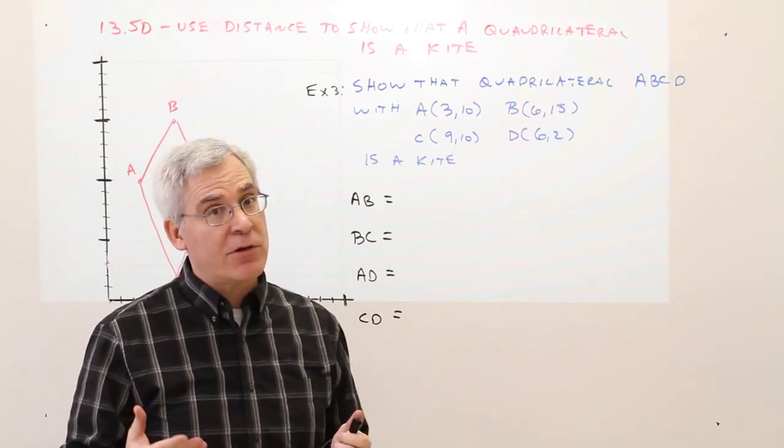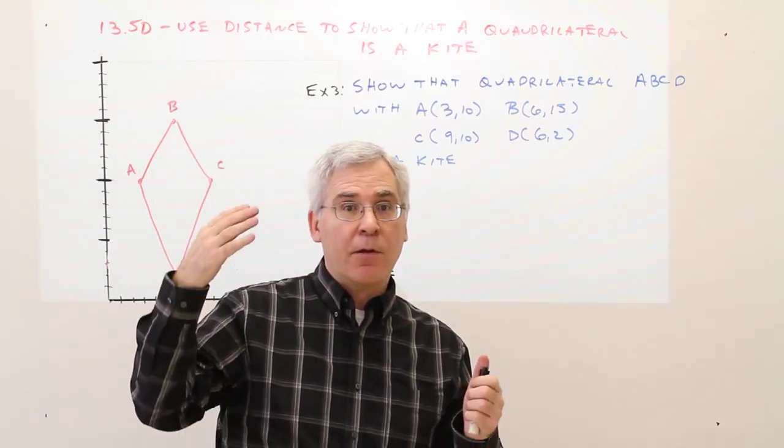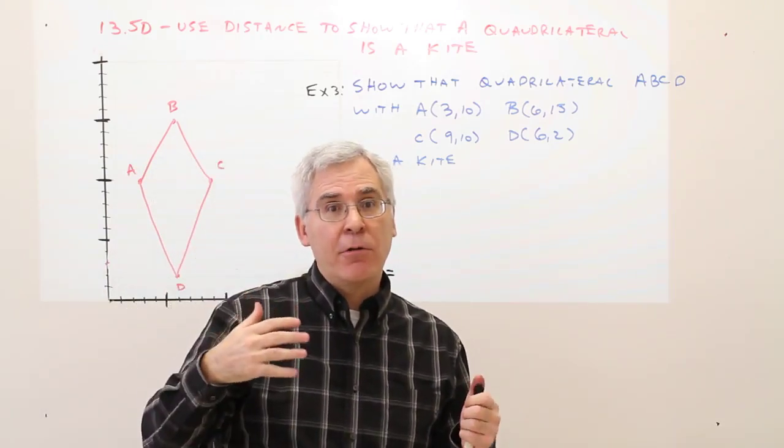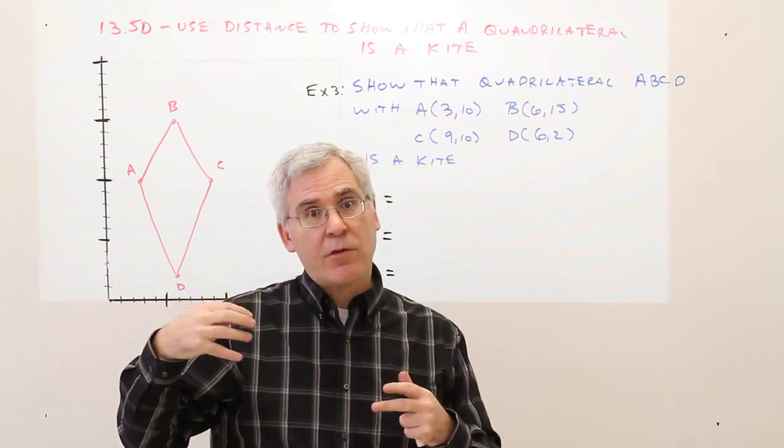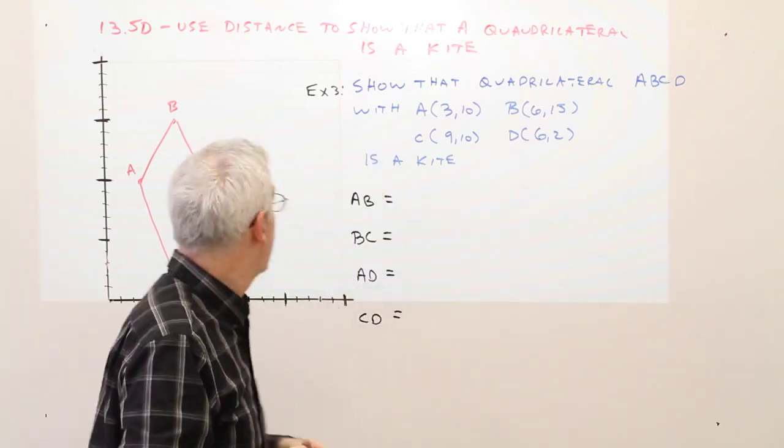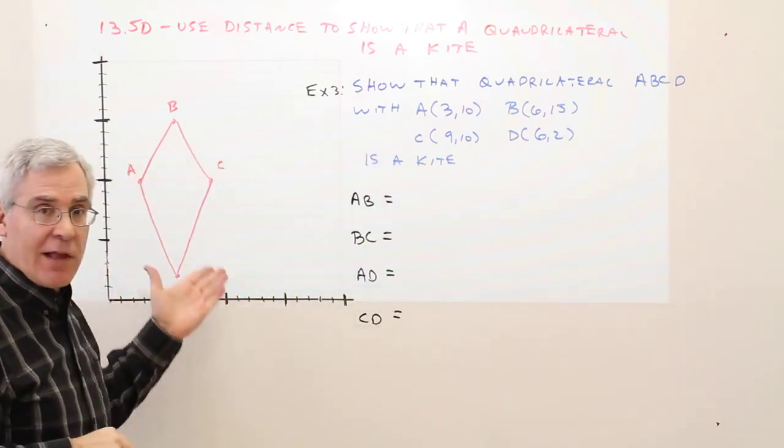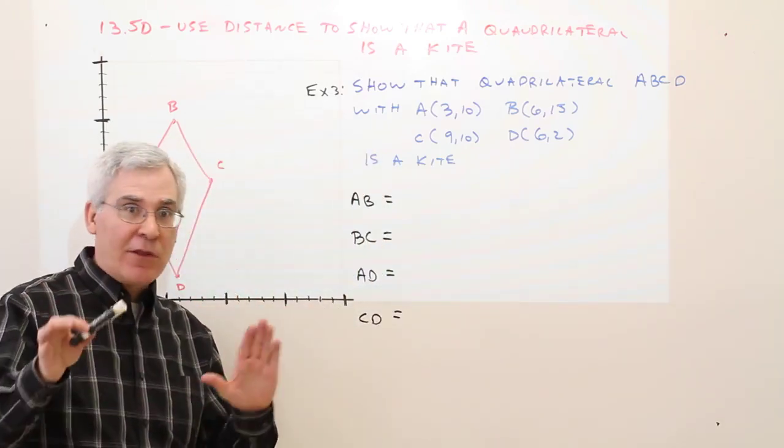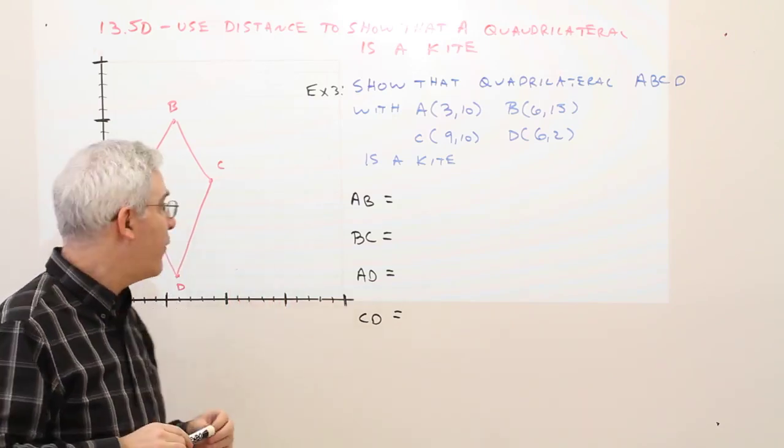Recall that the definition of a kite is a quadrilateral with two disjoint pairs of consecutive sides being congruent. So what I did is I sketched it here. You don't have to sketch it. I just do that so I can get a visual of what's going on.